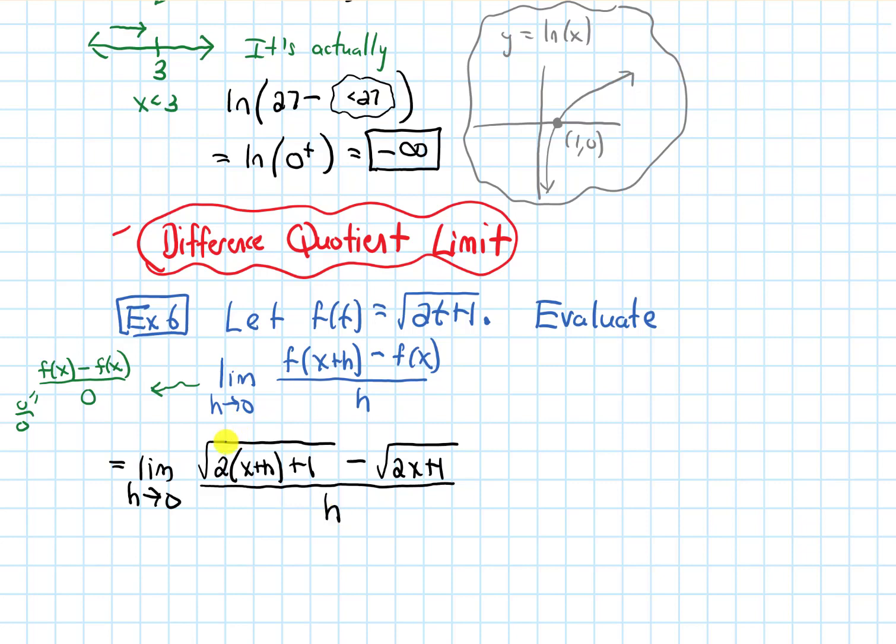So when we have a square root and then minus something, or a square root plus something, and I need to simplify, I can try to multiply by the conjugate. And this is a technique from algebra.